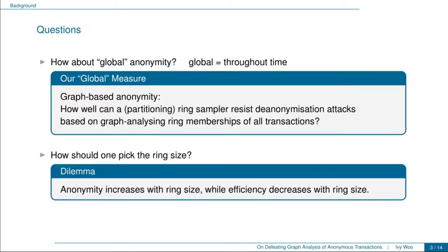Next, with this global anonymity measure in mind, we further ask: what is the ring size that one should pick? We know that on the one hand, anonymity increases with the ring size, but on the other hand, efficiency decreases with the ring size. Therefore, we want to know what is a good middle ground, and this will be the question that we attempt to answer.